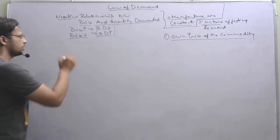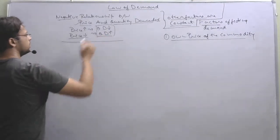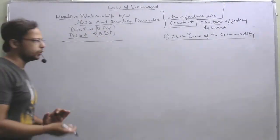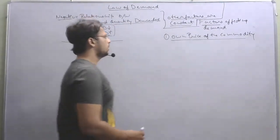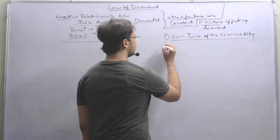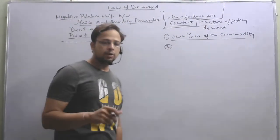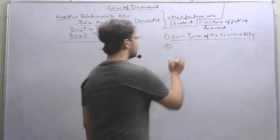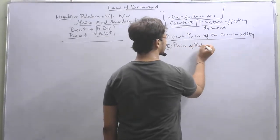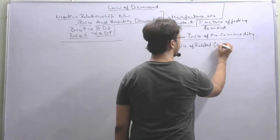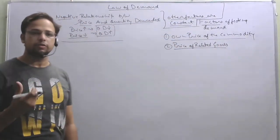The own price of the commodity is also stated in the law of demand, and all other factors are important likewise. The second factor is the price of related goods. What do we mean by the term 'price of related goods'?